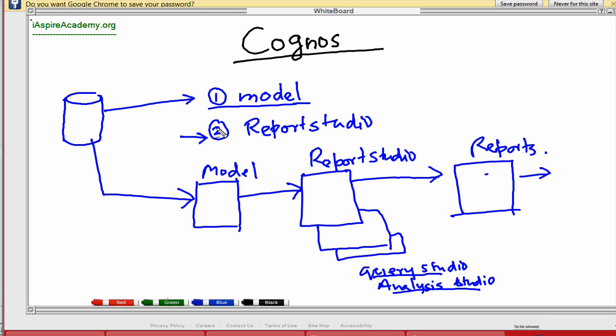So here you have main components are model, or you create a model using something called a Framework Manager. Framework Manager. So this is a Framework Manager. Now, so using Framework Manager, you create a model which contains the database structure information. So, for example, let's say if you want to create a report on sales data, so there could be a table called sales table.